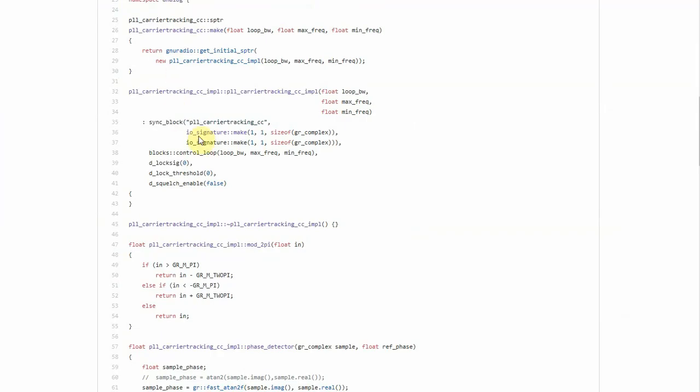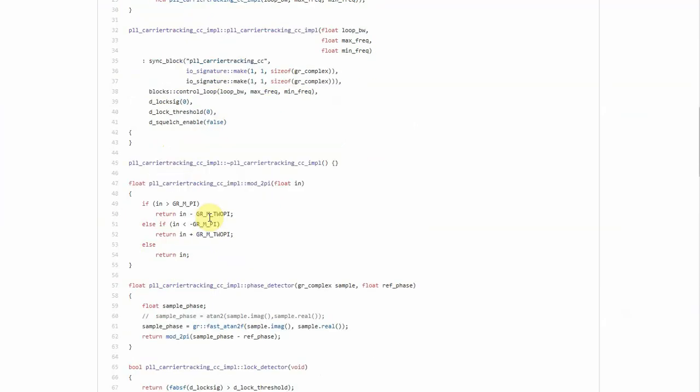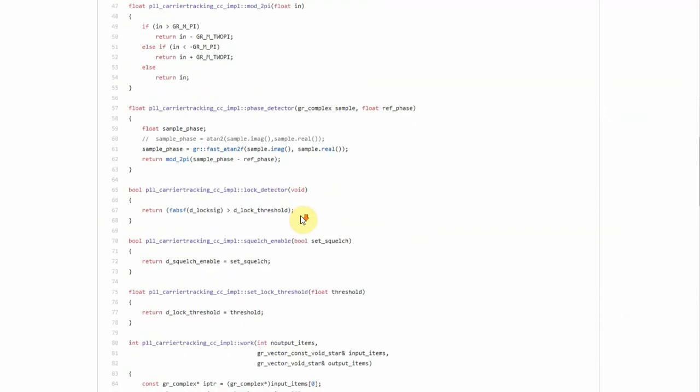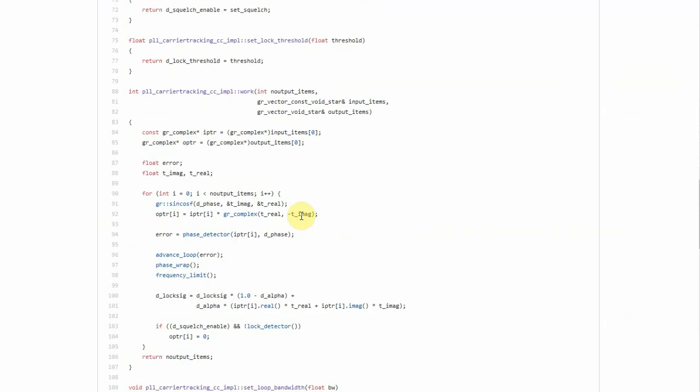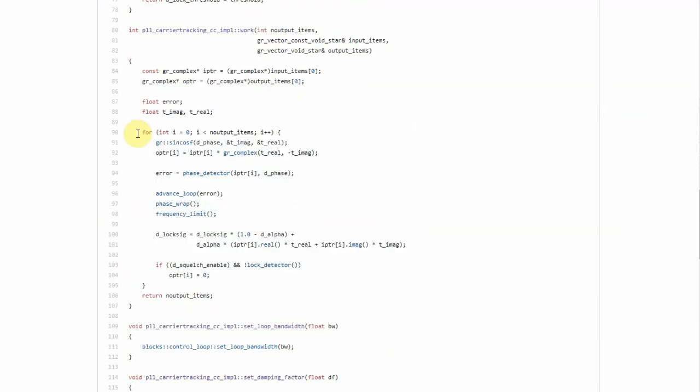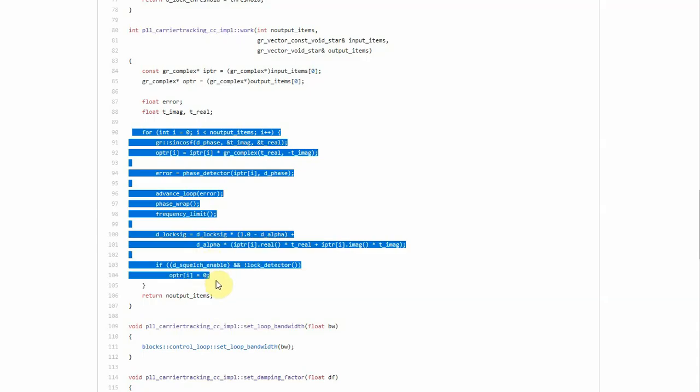So we conclude that the PLL carrier tracking block inherits this control loop. And this is what will be used later in the code. After the initialization and housekeeping, I will go to the implementation and then we will keep coming back to the relevant function later when it is required.